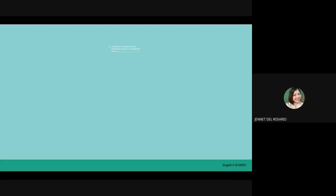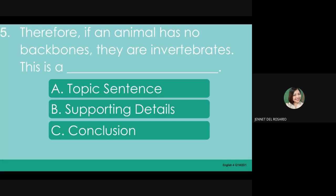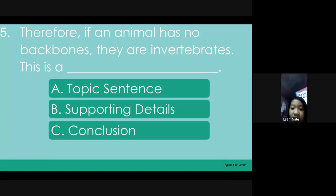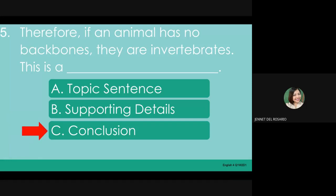Number 5: 'Therefore, if an animal has no backbone, they are invertebrates.' This is a blank. A. Topic sentence. B. Supporting details. C. Conclusion. The answer is letter C. Very good! You can still remember your lesson from Grade 3. Congratulations!